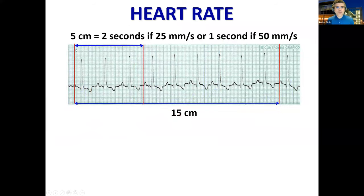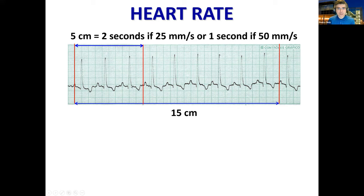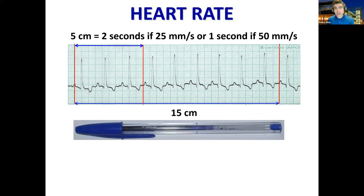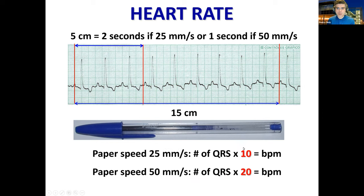To recap: if we have 5 centimeters of ECG, that's 2 seconds of time at 25 millimeters per second. At 50mm/s, 5 centimeters is only 1 second. For 6 seconds at 25mm/s, you need 15 centimeters. A useful trick: a big pen with its cap is exactly 15 centimeters. Place it on the paper-based ECG, count the beats, and multiply by 10 at 25mm/s or by 20 at 50mm/s.